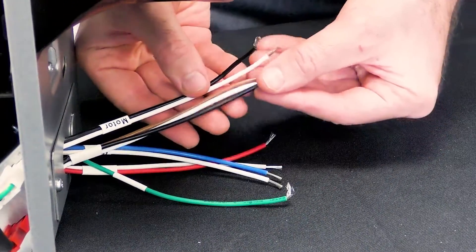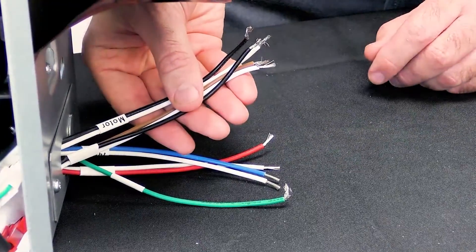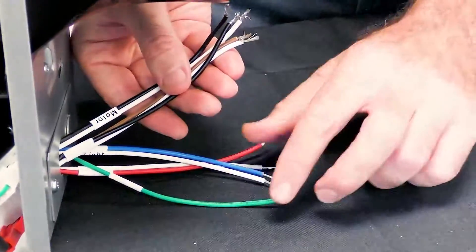Then, locate the harness composed of brown, black, and white wires that's connected to the plug-and-play module.